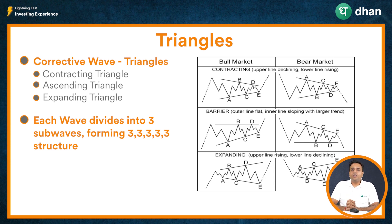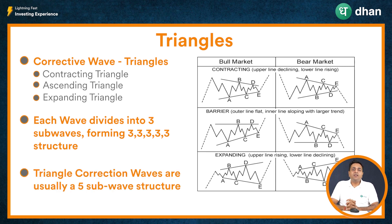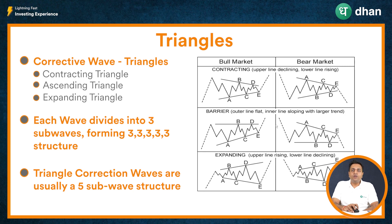Do note, we have only talked about 3 waves in the corrective wave — wave A, B, and C — but whenever it is a triangle formation, we can visualize this as 5 waves as well. That is why we have a 3-3-3-3-3 structure, and as spoken earlier, these can be either contracting triangles, a barrier also known as an ascending triangle, or an expanding triangle.